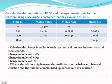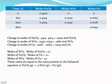They give us a data table. Consider the decomposition of N₂O₅ and the experimental data for the reaction taking place inside a container with a volume of 3.0 liters. They ask to calculate the change in moles of N₂O₅, NO₂, and O₂ between 600 and 1200 seconds. The change in moles is the moles at 600 minus moles at 1200 for the reactant, and moles at 1200 minus moles at 600 for the products — you can also just take the absolute value.